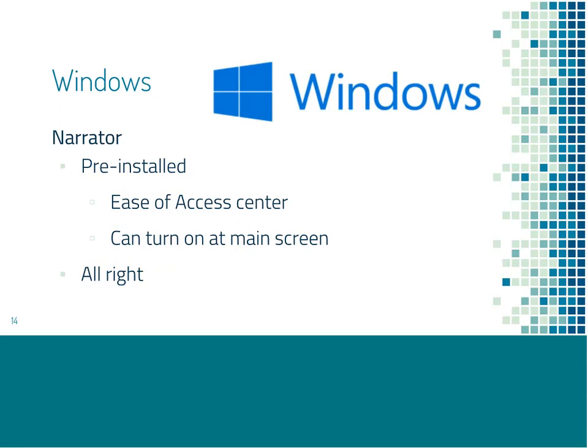Windows has a couple of different options. The first comes pre-installed on Windows computers — it's called Windows Narrator. You can access it through the Ease of Access Center. If someone is blind or low vision and having difficulty finding it, you might have to turn it on for them — there's a little icon in the lower left of the main screen before you even log in. Once you've booted up, you can also find it under the Start menu. Once you turn it on, it's a pretty decent screen reader that people will have some familiarity with.